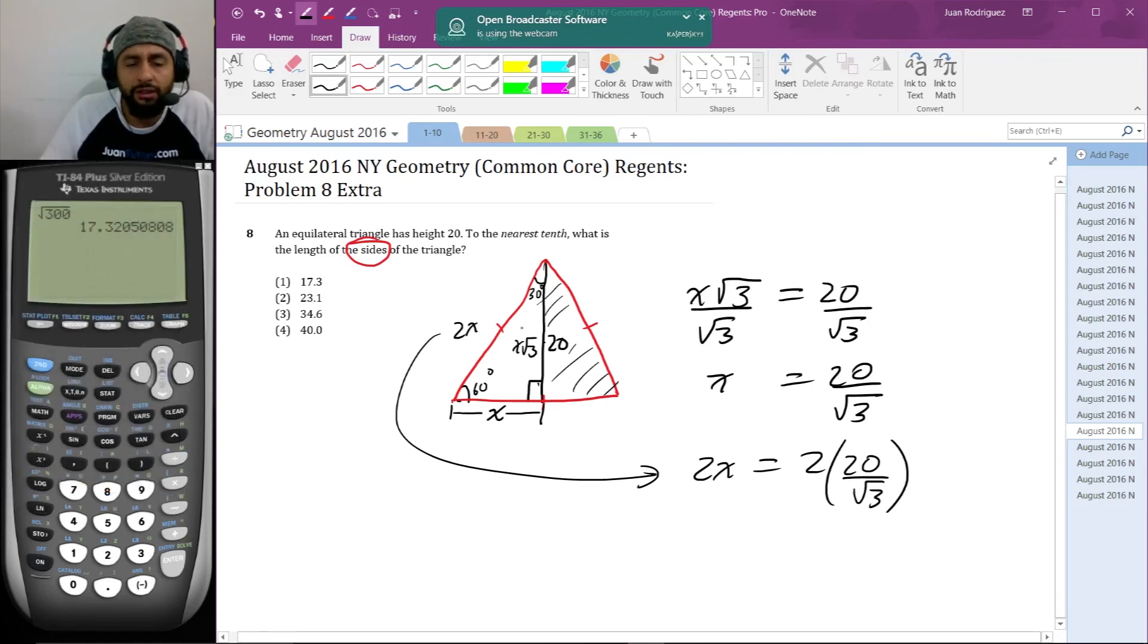Before I plug it into the calculator, we should be able to use some intuition to decide what the answer should be based on the diagram. The height is 20. The length of a side is longer than the height—it looks longer, and I know it has to be longer because the altitude is the smallest length from the vertex to a base. So the side has to be longer than 20. That eliminates some answers, but it's not double the length of the height, so it's not going to be 40. I suspect that 23.1 is the answer.